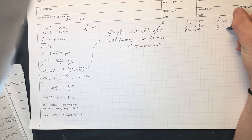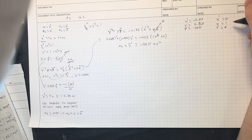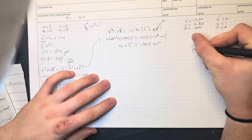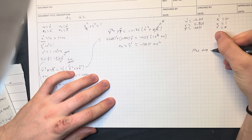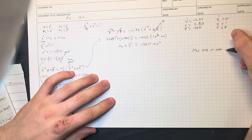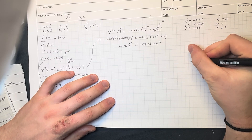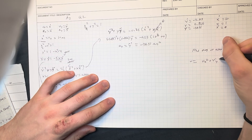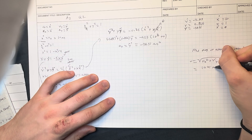We know that x-double-dot is zero because acceleration in the x-direction is zero since the velocity is constant. Now all that's left is to find the magnitudes. The magnitude of velocity equals the square root of vx² plus vy², which works out to 10.41 meters per second.